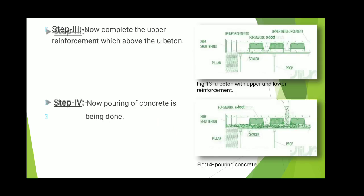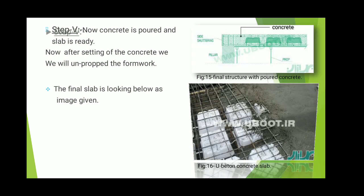In step three, we complete the upper reinforcement above the U-Boots. After that, in the fourth step, we pour the concrete in between them as required. In the fifth step, after the concrete is poured and the slab is set, we un-prop the formwork, removing the shuttering, and the slab is now ready for use.